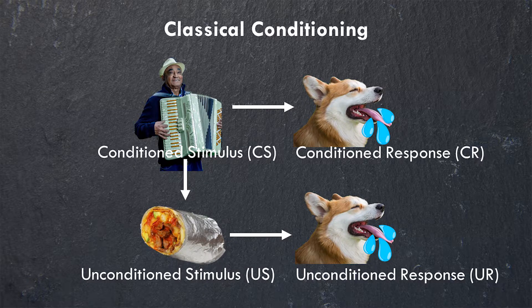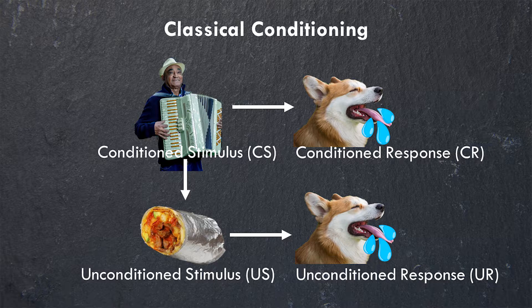This means that we can talk about it in an abstract way, using symbols to stand in for the individual parts. The stimulus that elicits a natural response — such as food causing salivation — we call an unconditioned stimulus, and the response is an unconditioned response. The stimulus that's being learned about is the conditioned stimulus, and the response that is learned is called the conditioned response.